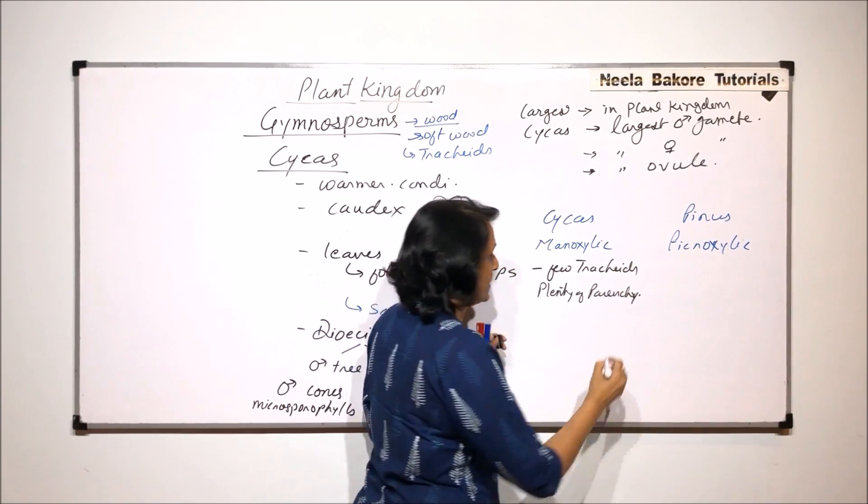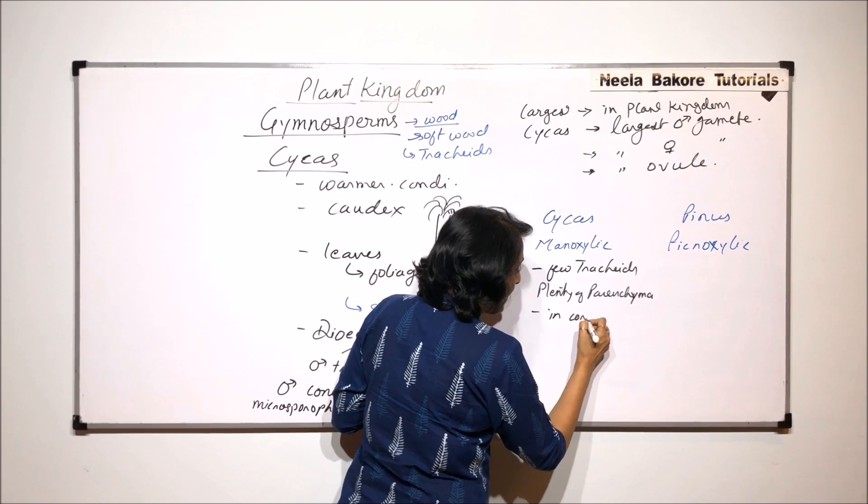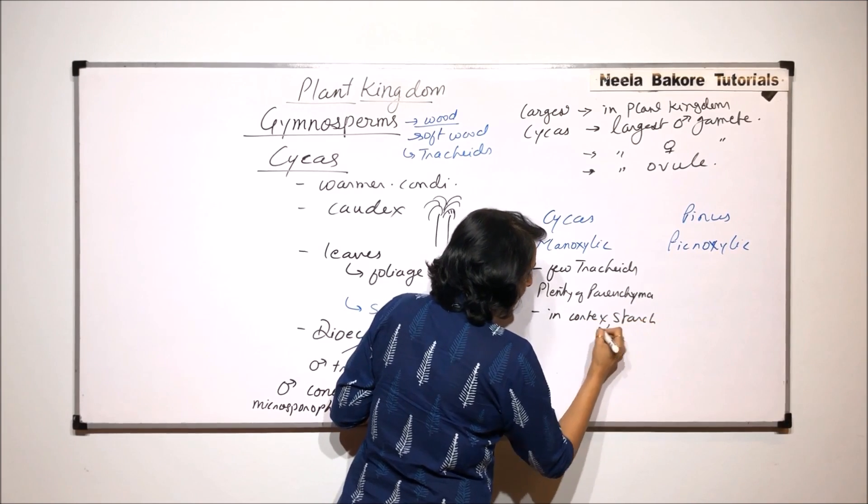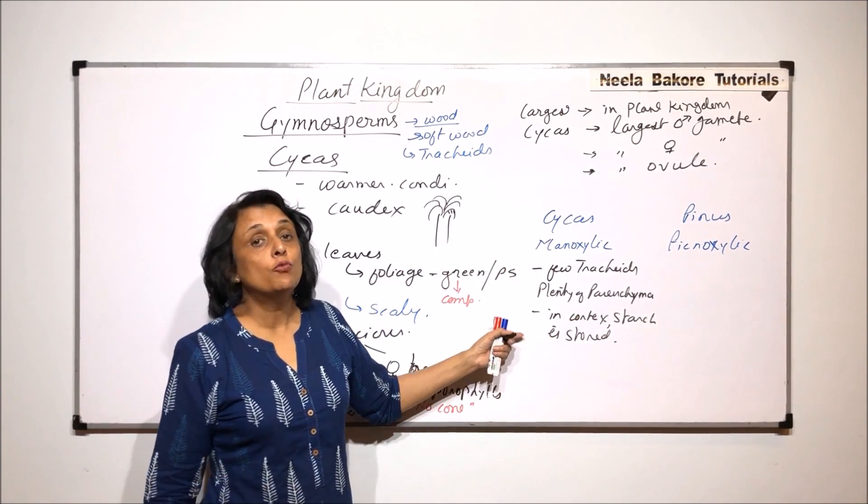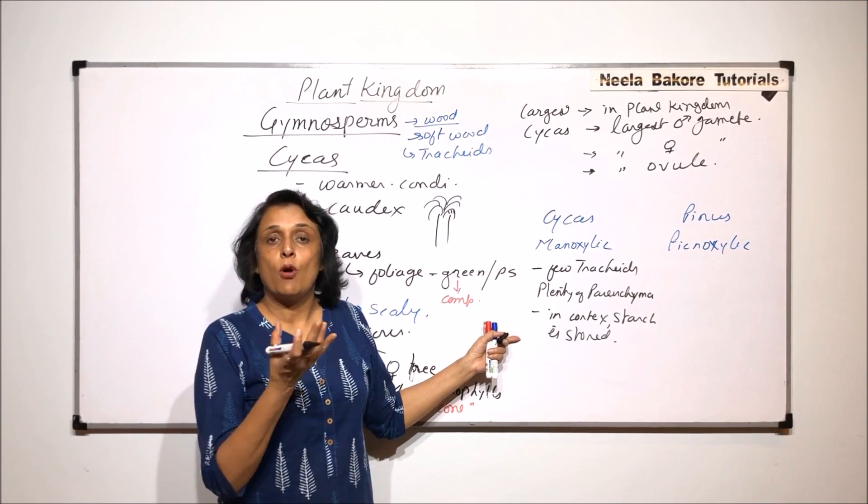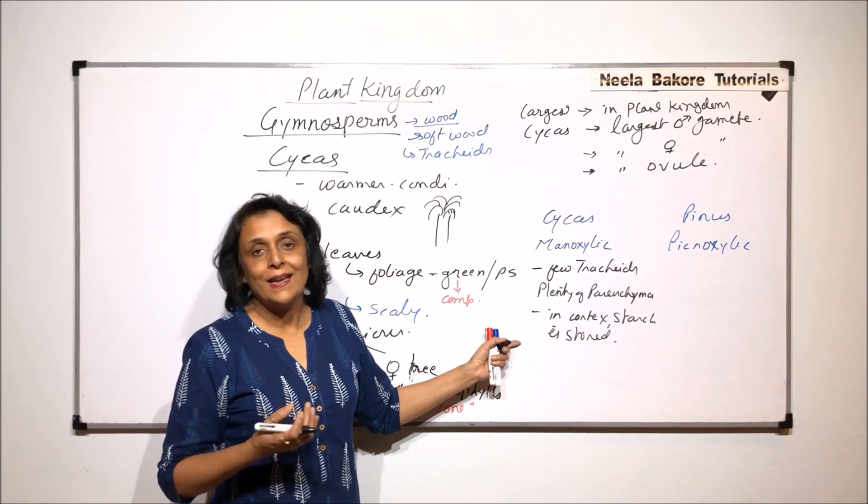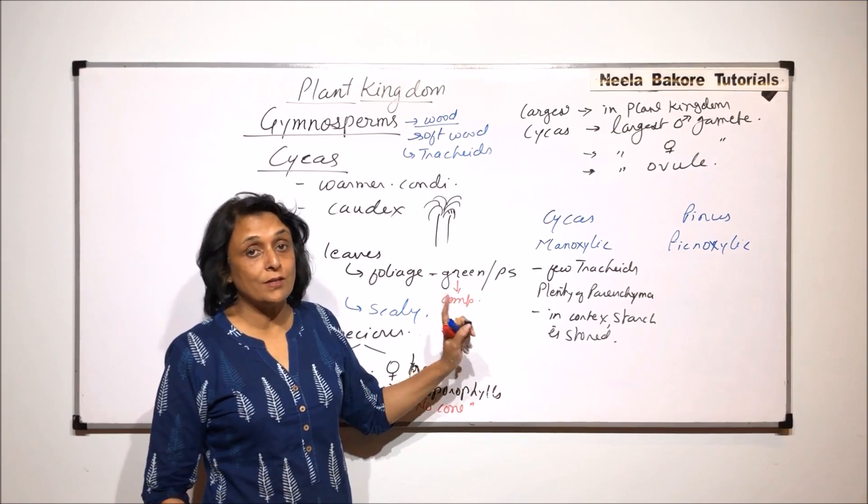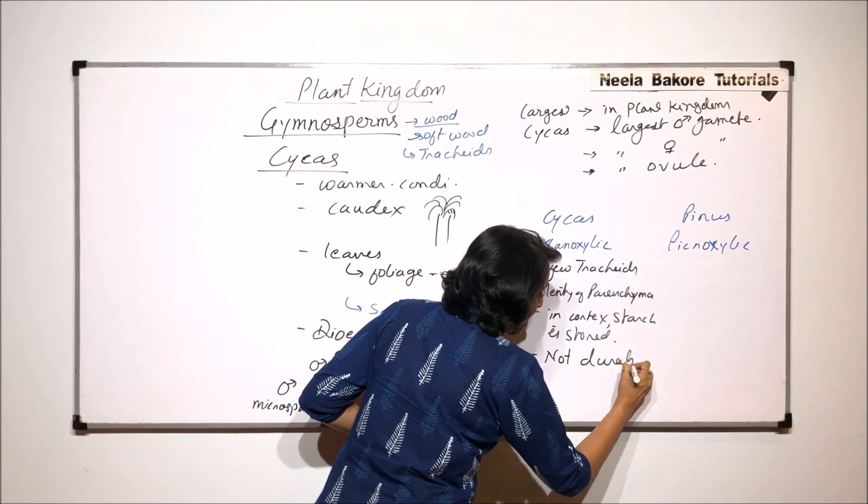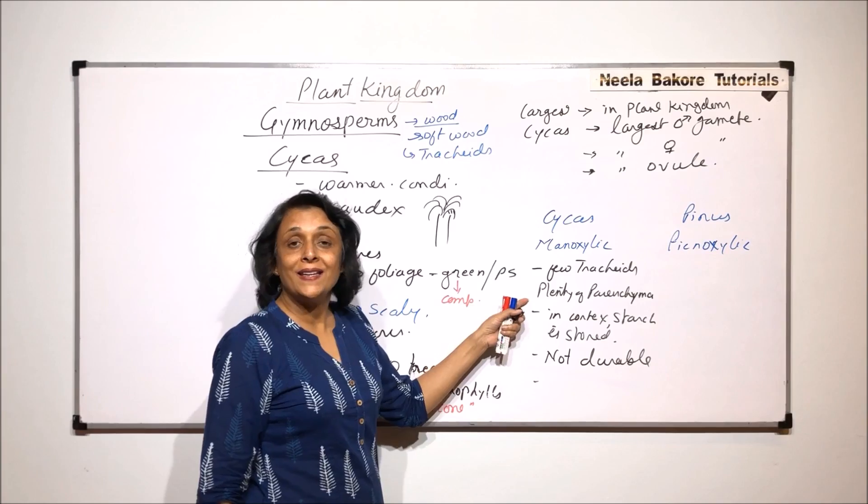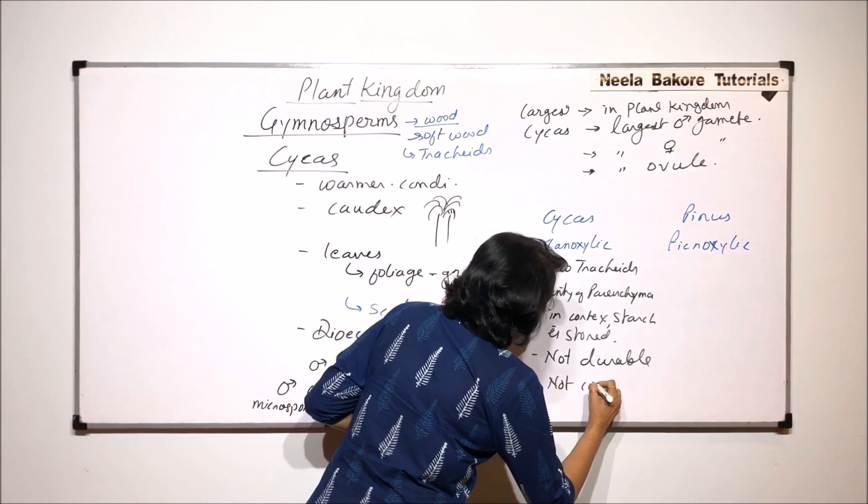Now what does this mean? In Cycas the wood has few tracheids and plenty of parenchyma. Parenchyma means that cortex. So cortex is in plenty, and in cortex starch is stored. Because of this stored material, the wood is not durable because if there is some organic material in the form of reserved food, it is a good source of food for organisms like fungus or bacteria. So there are chances of infection. So this wood is not durable.